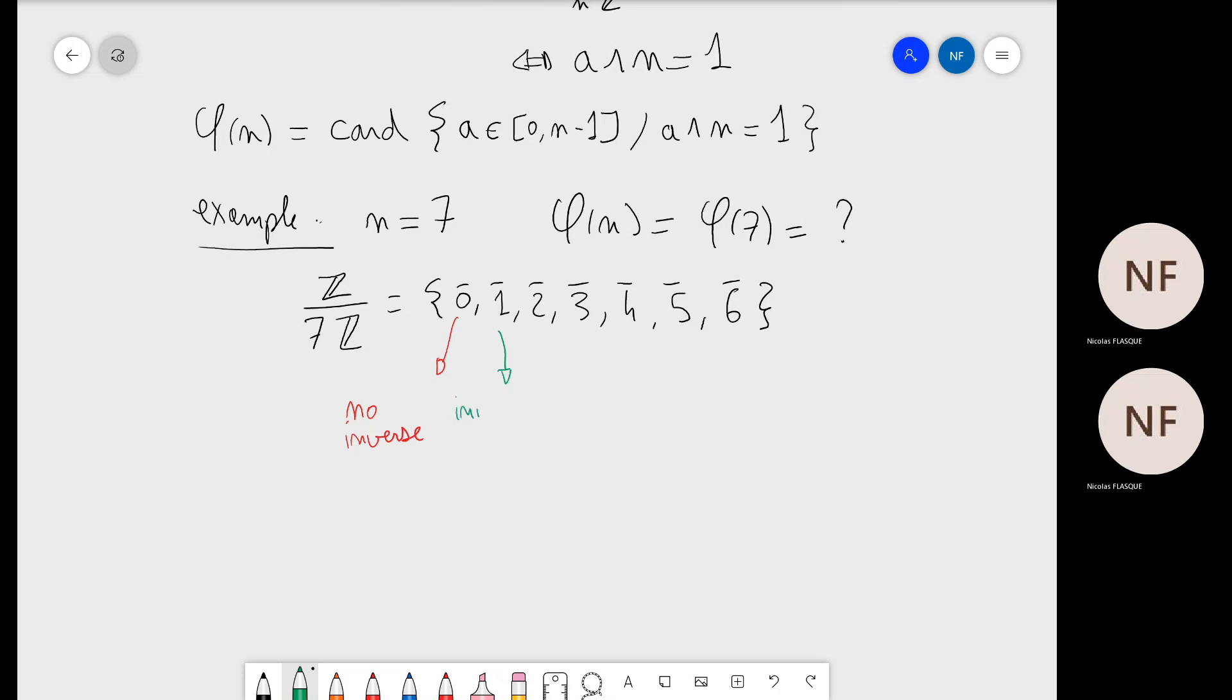Let's use this in another way. We know that zero bar has no inverse, that one bar has an inverse which is one bar. This is true for any value of n.